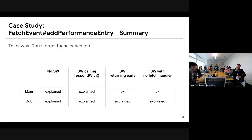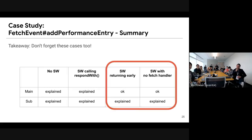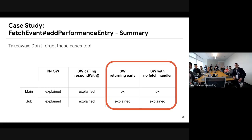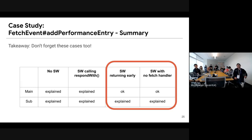The key takeaway: please don't forget these two fallback cases. The 'no service worker' case has no problems, and the main use case is the service worker calling respondWith. But I also needed to think of the 'no respondWith' and 'no fetch handler' cases too. Since this is attached to the fetch event, there are no problems when we don't have a fetch handler — but that's exactly the point of this case.